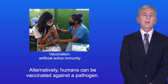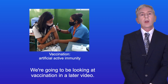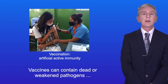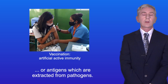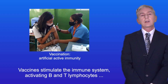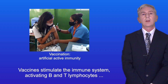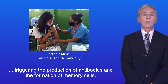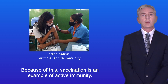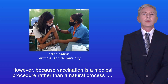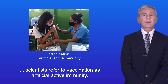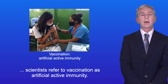Alternatively, humans can be vaccinated against a pathogen, and we're going to be looking at vaccination in a later video. Vaccines can contain dead or weakened pathogens, or antigens which are extracted from pathogens. Vaccines stimulate the immune system, activating B and T lymphocytes, triggering the production of antibodies and the formation of memory cells. So vaccination is an example of active immunity. However, because vaccination is a medical procedure rather than a natural process, scientists refer to it as artificial active immunity.